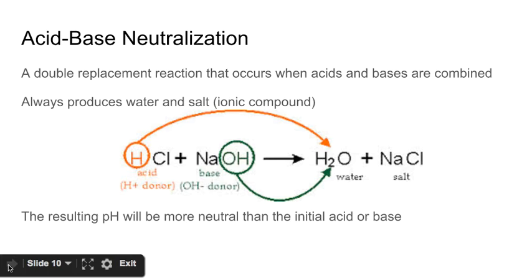And the last thing we'll need to know for acids and bases are the acid-base neutralization reactions. And we've already seen these. It's just a specific kind of double replacement reaction that happens when you mix an acid and a base together. And an acid and a base will always produce water and salt. And salt is not necessarily NaCl, which is table salt. Salt just means an ionic compound. So here we have HCl, hydrochloric acid, and sodium hydroxide.